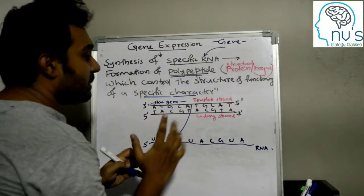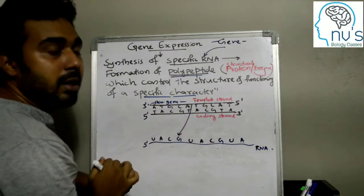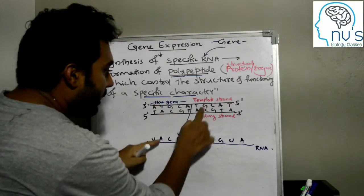What will the coding strand be? They are tied together — that is not just RNA. This is RNA. This is the RNA sequence.